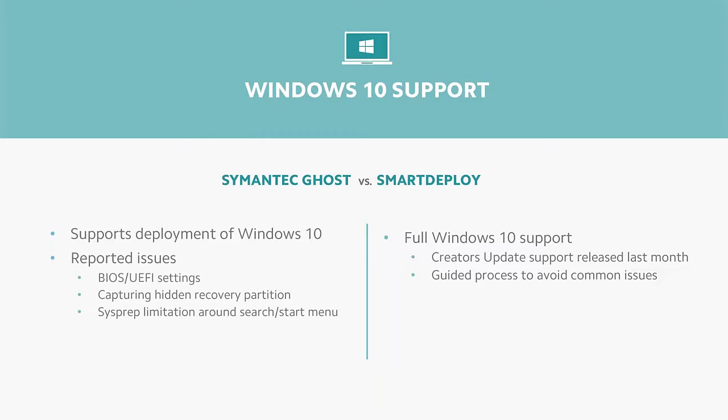Capturing a hidden system recovery partition requires using special switches from the GhostCast server, and there are limitations around SysPrep with the Apex packages built into the OS. Search and the start menu are now Apex packages and require specific generalization — otherwise they fail to work in user accounts after deployment. With SmartDeploy, we stay on top of all these different release cycles from Microsoft, getting the bits as early as possible, and we handle common scenarios like UEFI: capturing an image from a VM in legacy mode, but deploying it to a UEFI-based device correctly.